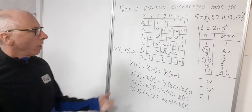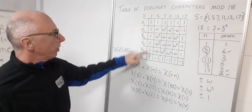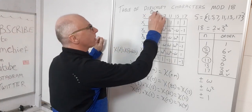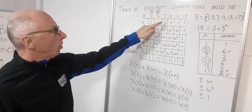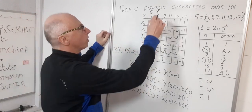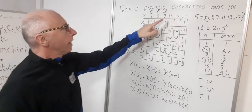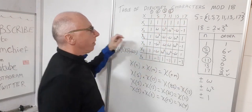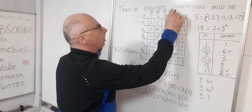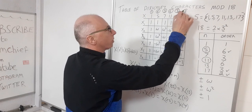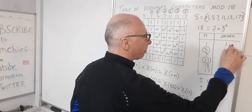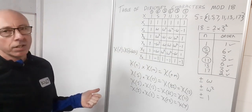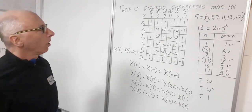Let's check the order of all elements in the table. Element 1 has 1 solution — good. Element 5 has 6 different solutions — good. Element 7 has 3 solutions. Element 11 has 6 different solutions. Element 13 has 3, and element 17 has 2. All entries in the table are verified. If you can see any errors please put them in the comments below. That's my Table of Dirichlet Characters modulo 18. Thanks for watching.